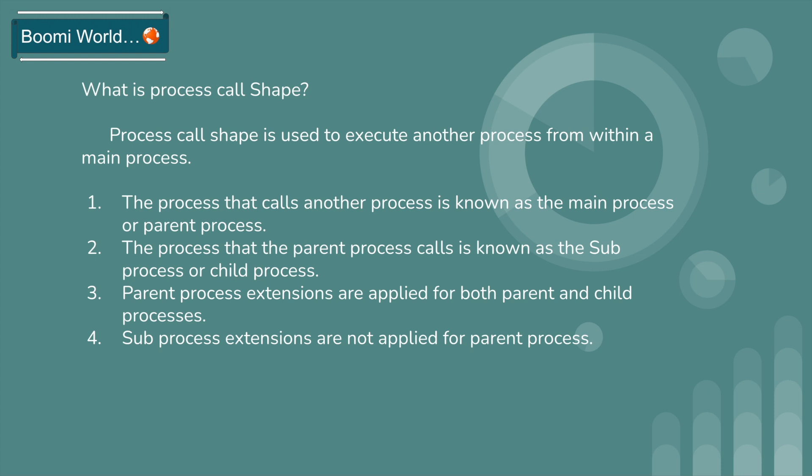Process call shape is used to execute another process from within a main process. As per your requirement, if you want to execute another process from a main process, you can use process call shape. The process that calls another process is known as the main process or parent process. The process that the parent process calls is known as the sub process or child process.